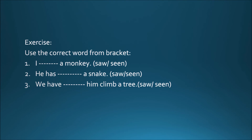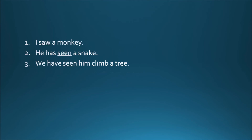Children, I hope you all have done this exercise. Now let us check the answers. I saw a monkey — so here we have used the past form of the verb without a helping verb. He has seen a snake — seen is the past participle form of see, and with 'seen' we have used 'has'.